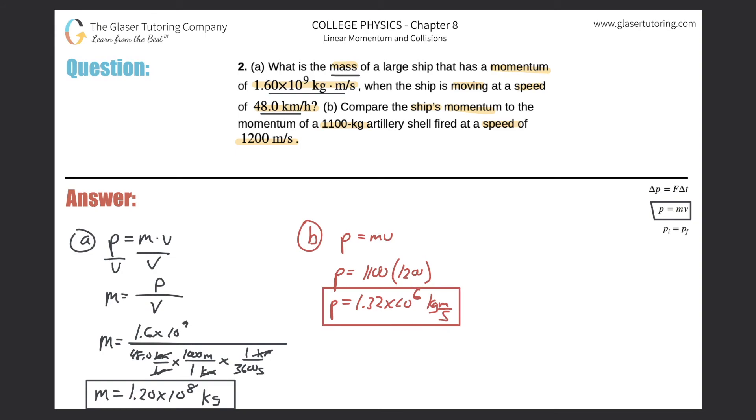So that would be the momentum, not the answer yet, because they're asking us to compare it. So now what I want to do is why don't we take the momentum of the ship, which was given, and then divide that by the momentum of the artillery shell. So the momentum of the ship divided by the momentum of the artillery shell will simply be 1.6, 1.60 times 10 to the 9, divided by them, 1.32 times 10 to the 6.